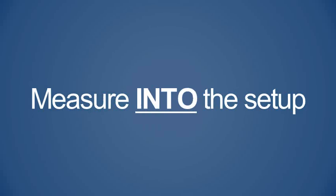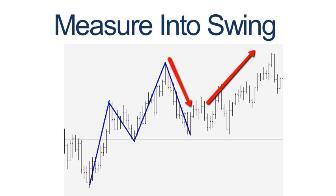So, how do we draw our Fibs? For this method, we are simply measuring the swing into the setup and projecting the targets out of the setup. Look at this chart — the downward arrow shows the swing that we're measuring, assuming you trade pullbacks. This is the move into your setup. The move to the upside is what's projected.